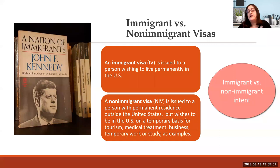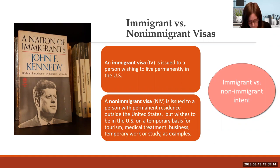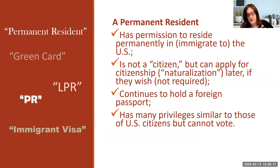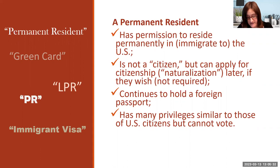The H-1B, on the other hand, is considered a dual intent visa category, meaning it allows for people to have either non-immigrant intent or to be intending to immigrate to the U.S. A permanent resident has permission to reside permanently in or immigrate to the U.S. A permanent resident is not a citizen, but they can apply for citizenship or naturalization later if they wish — it's not required. They continue to hold a foreign passport and have many privileges similar to those of U.S. citizens, but cannot vote.